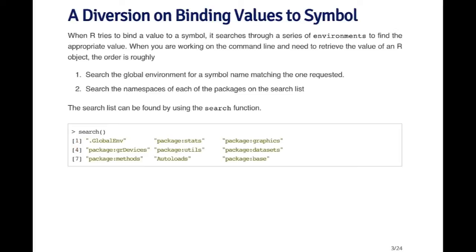R needs to bind a value to a symbol. In this case the symbol is lm and the value is going to be a function — either my function or the one in the stats package. When R tries to bind a value to a symbol, it searches through a series of environments. You can think of environments as lists of symbols and values.